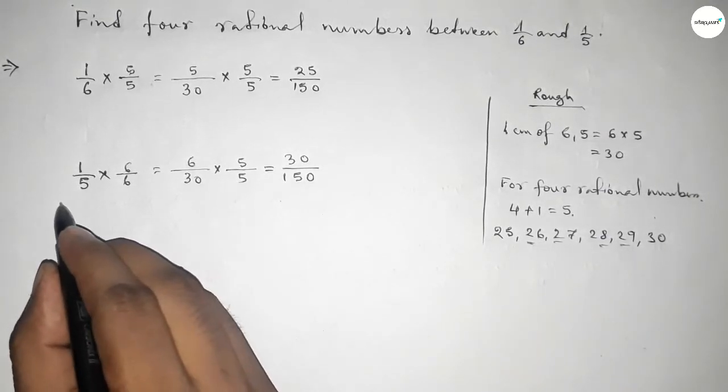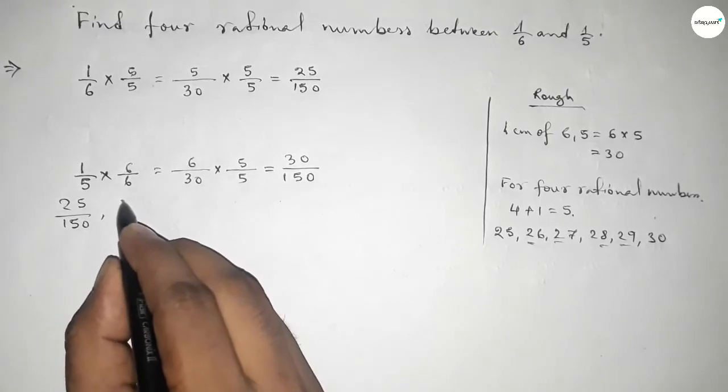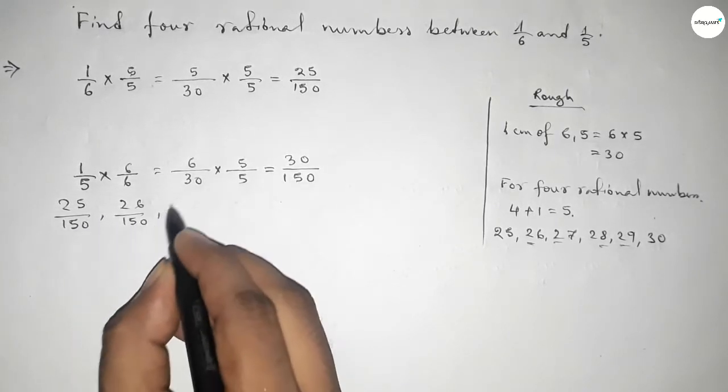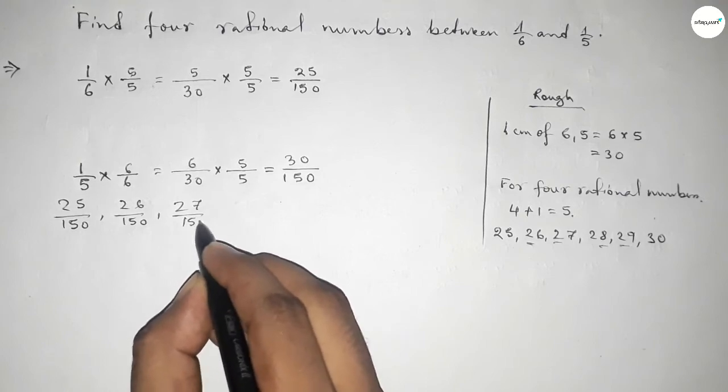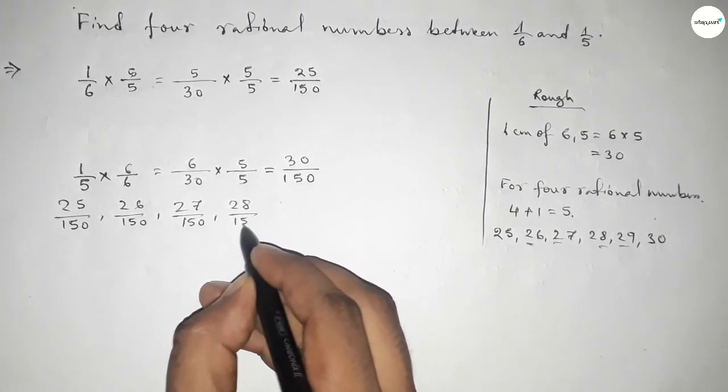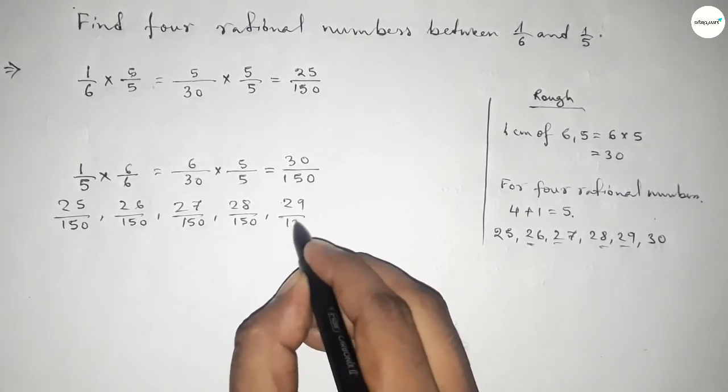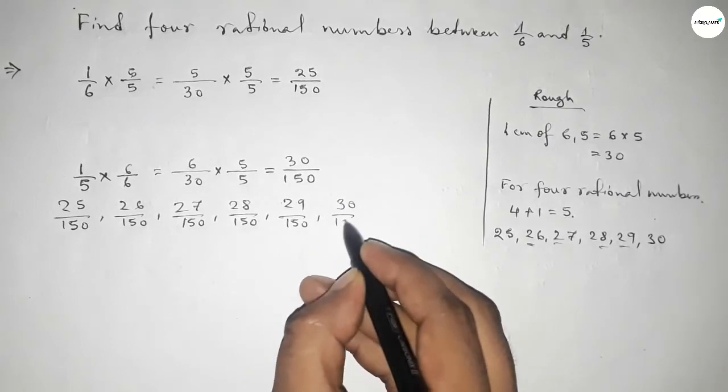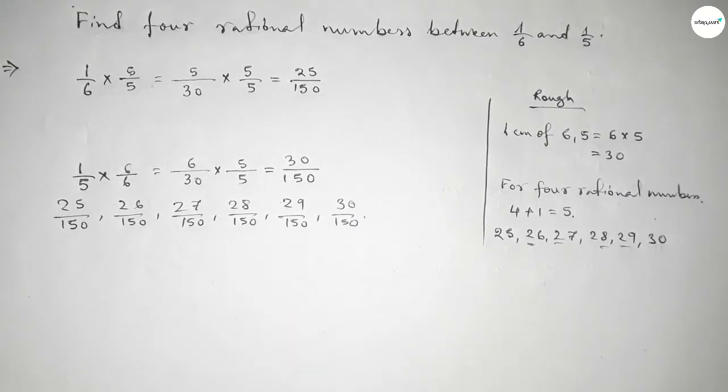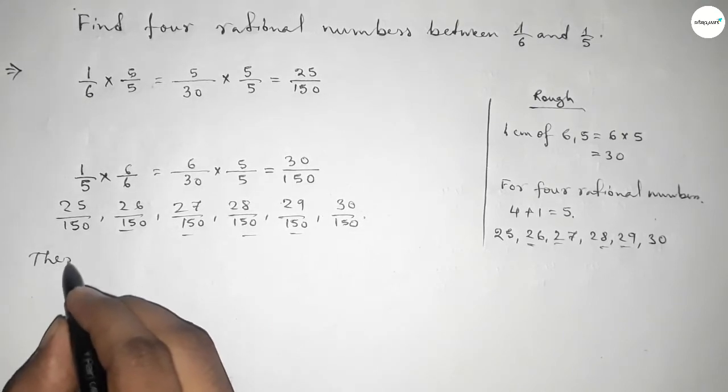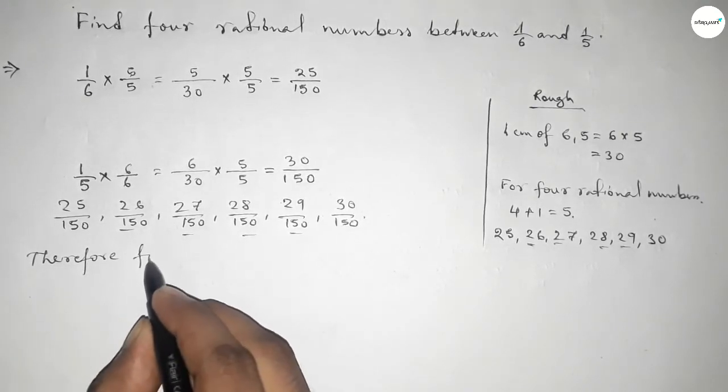So here 25 over 150, 26 over 150, 27 over 150, up to 30 over 150, and these are the required four rational numbers between 1 over 6 and 1 over 5.